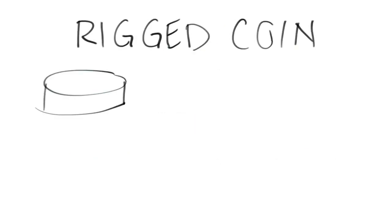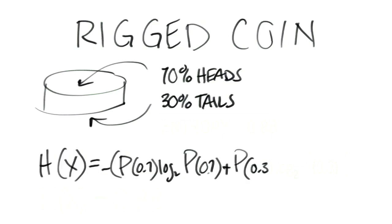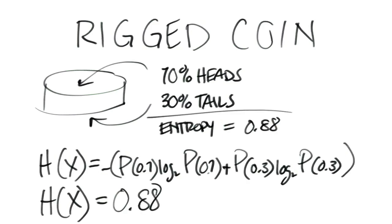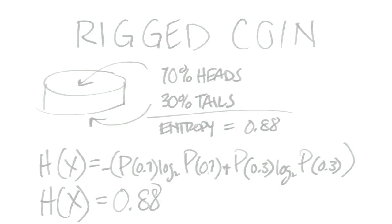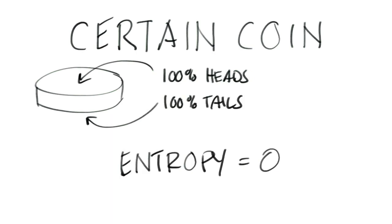If we take an example where we don't have a fair coin — say there's a hustler using a loaded coin — the probability of heads is 70% and the probability of tails is 30%. In this case, the maximum entropy is going to be 0.88. So you can see that as the uncertainty goes down, your entropy will trend towards zero. If you were at zero entropy, that would mean no uncertainty and the coin flip would always be heads or tails.